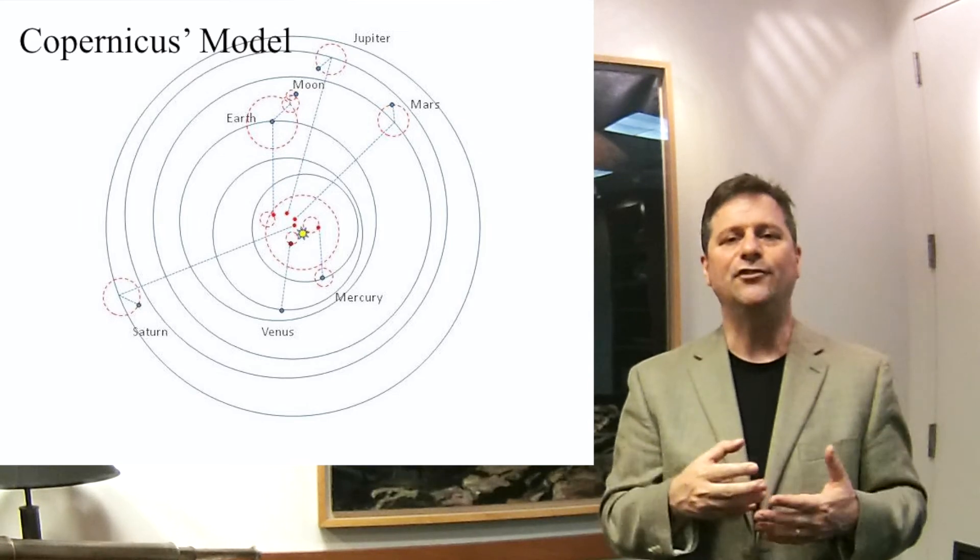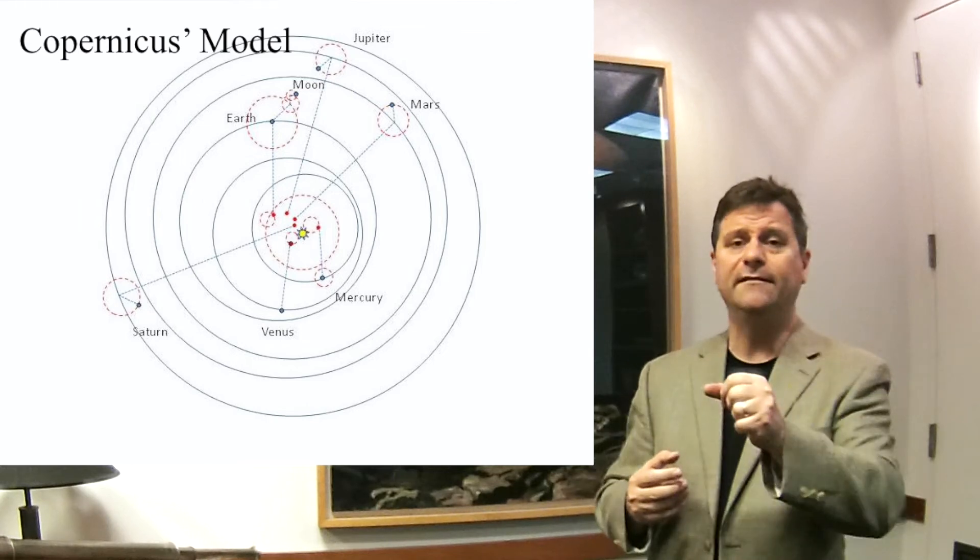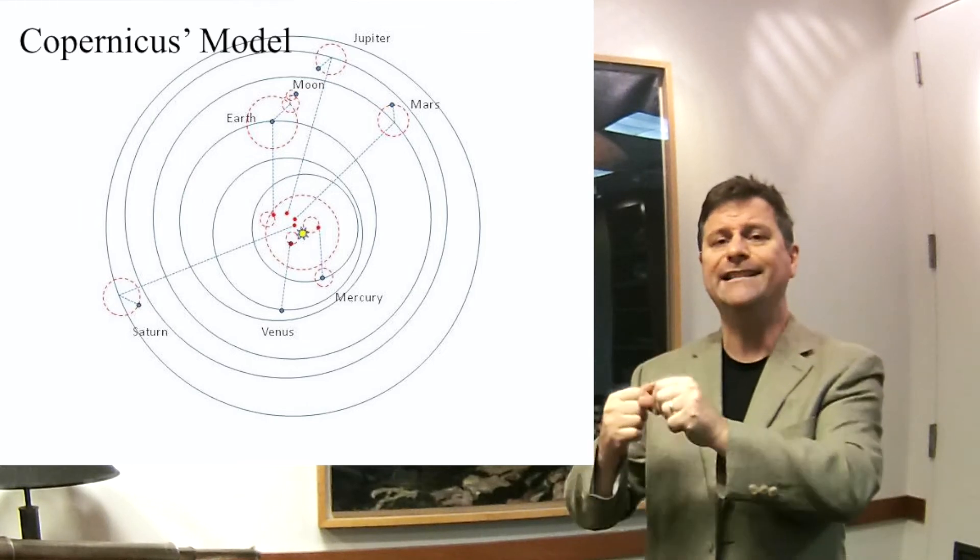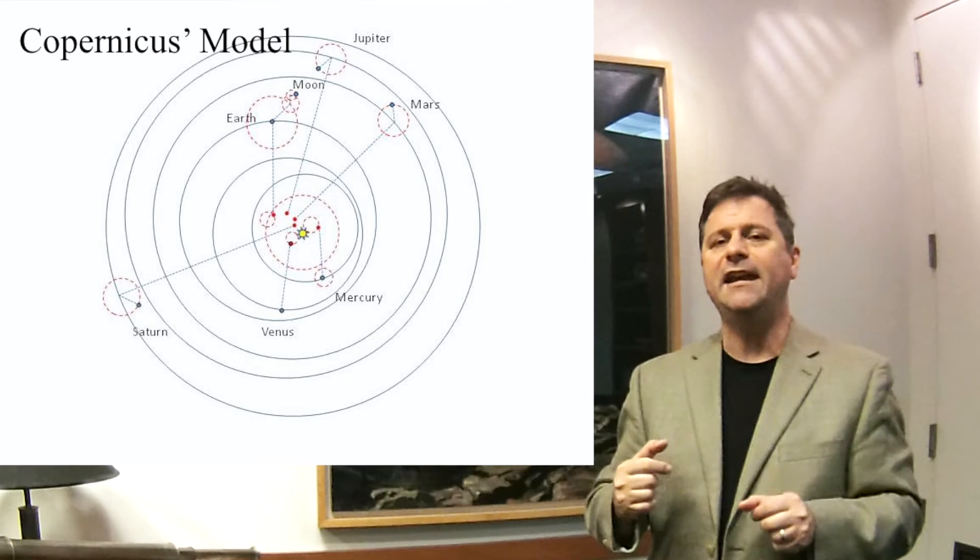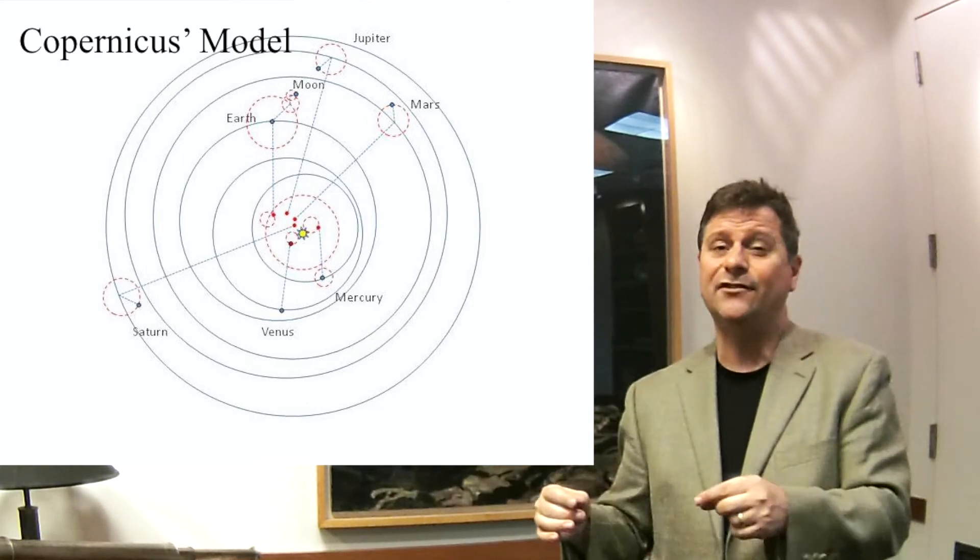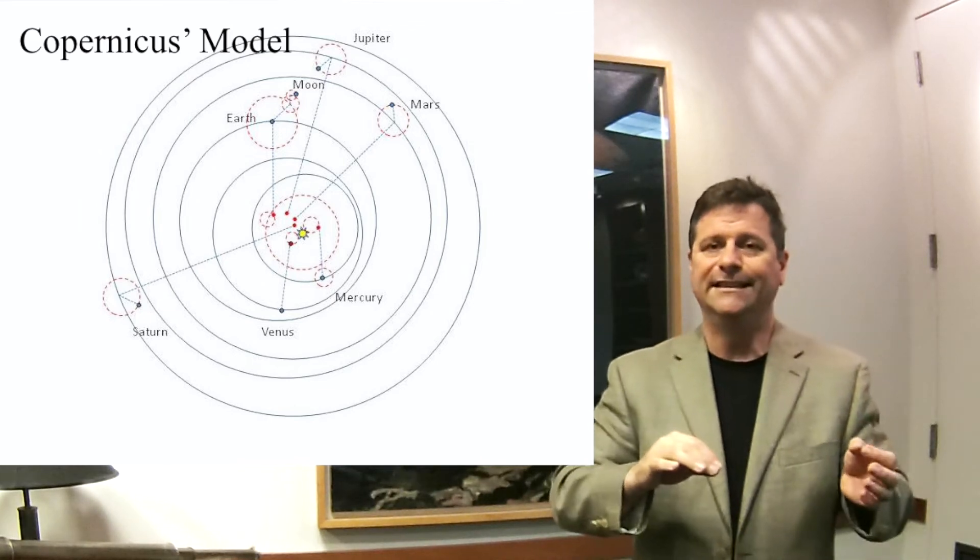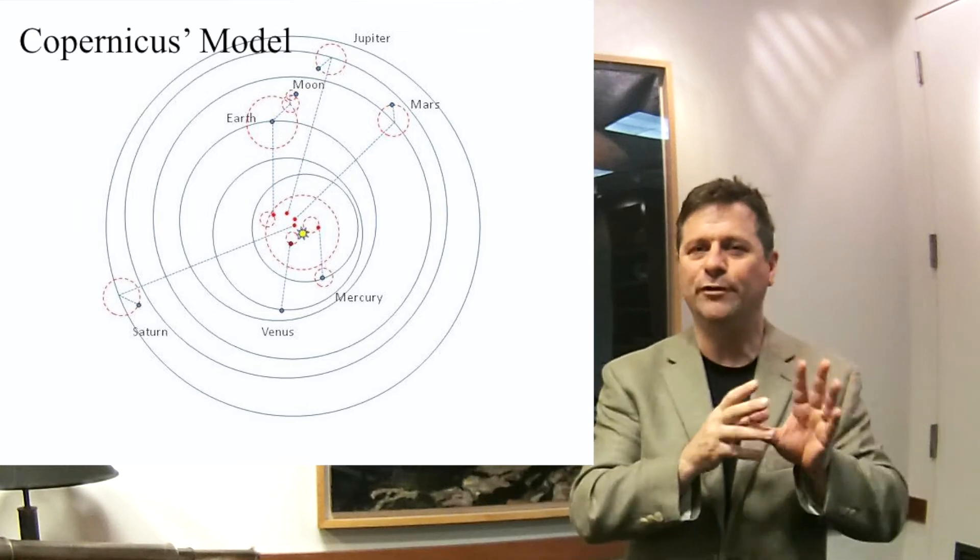So the sun at the center meant the following, is that every planet orbited the sun. But as they orbited the sun, the centers of their orbit weren't the center of the sun. They were the center of the Earth's orbit around the sun. You see how that works? That's kind of weird.